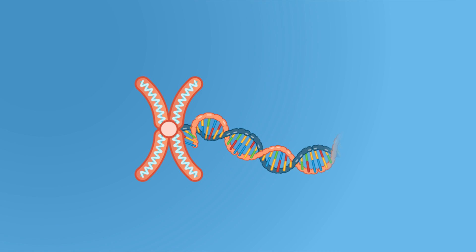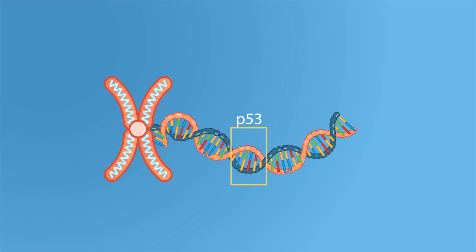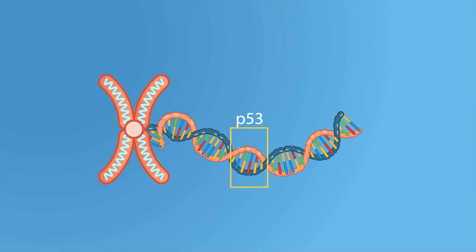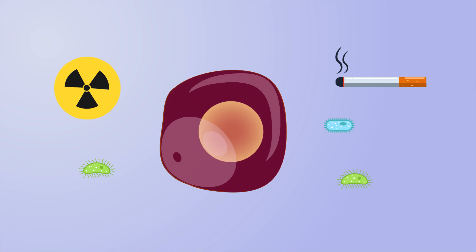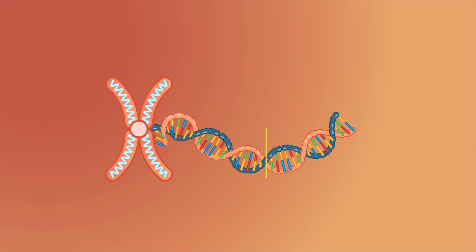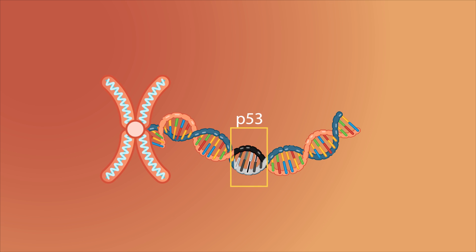The p53 gene is one of the controlling factors of this process. However, when the cell is subjected to certain mutation-causing agents, this gene malfunctions, preventing apoptosis.